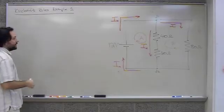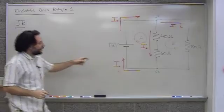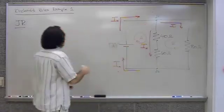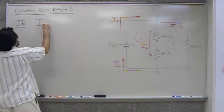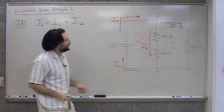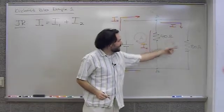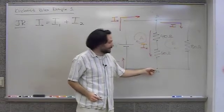First, the junction rule. The junction rule, as applied to J1, is going to give us I0 is equal to I1 plus I2. And if you look at junction two, you see that I1 is the current going into J2. I2 is the current going into J2.